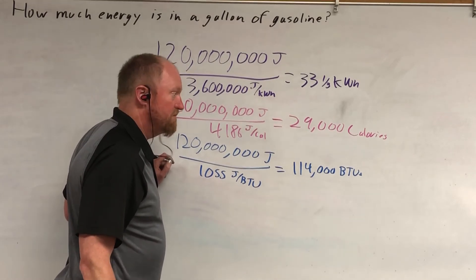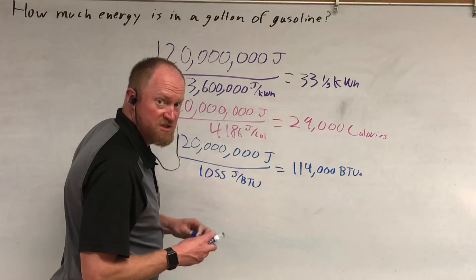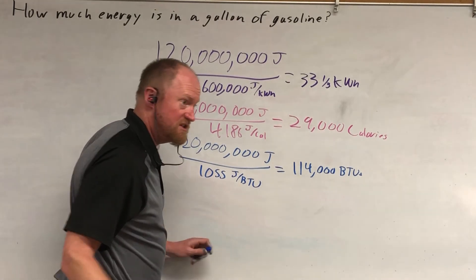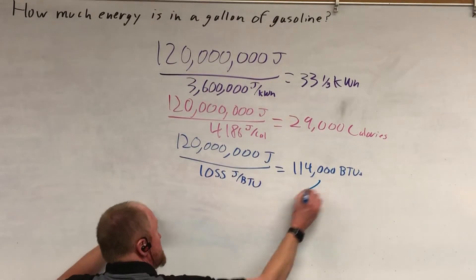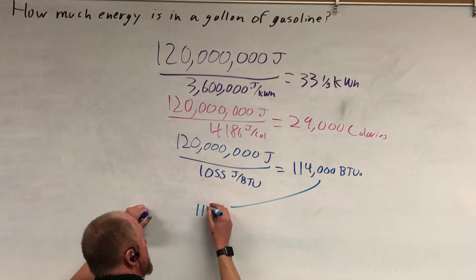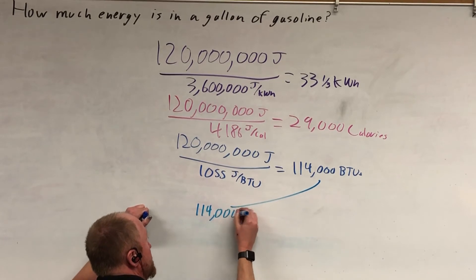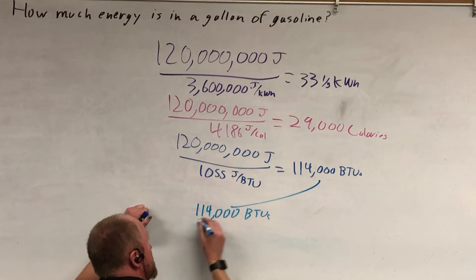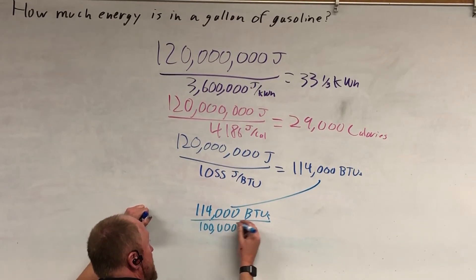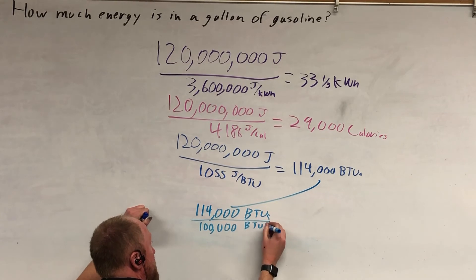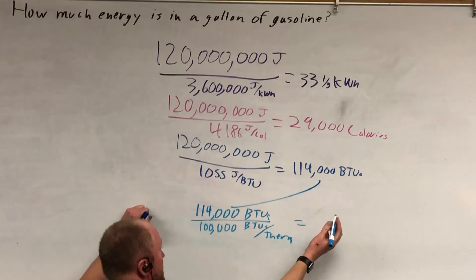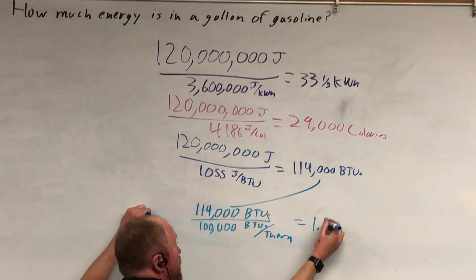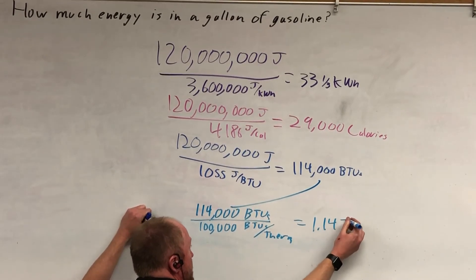Now, my gas bill comes in therms. That's pretty easy, once you've got your BTUs, because it's exactly 100,000 BTUs in a therm. So, I'm just going to take this down here. 114,000 BTUs divided by 100,000 because of the 100,000 BTUs in a therm.